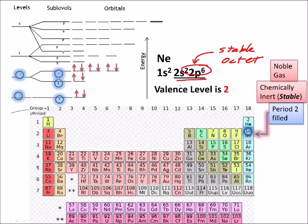That's the idea behind electron arrangement — electron configurations. In the ground state, the electrons will be in the lowest energy levels possible.